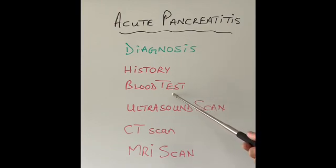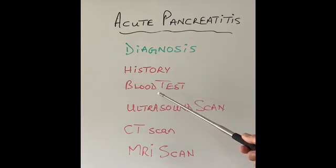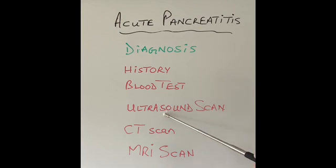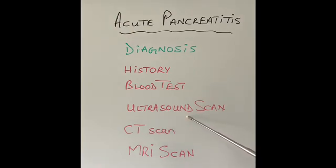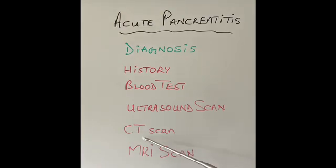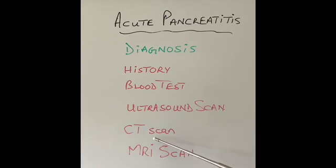These blood tests are also very useful to stage the patient into mild, moderate, or severe pancreatitis. Blood gases are done to check that oxygen levels are not too low, since pancreatitis can affect the lungs and breathing, especially in severe cases. An ultrasound scan can look for gallstones, CT scan is very good for looking at the pancreas gland itself, and MRI scan can also assess how badly inflamed the pancreas is.